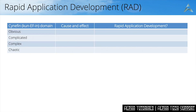So it makes sense to look at when rapid application development should be used. One way of looking at it is by using the Cynefin method — it is a Welsh word, which explains why it is spelled differently than how you pronounce it. Cynefin has four domains and looks at the handling of uncertainty: the obvious, the complicated, the complex, and the chaotic.